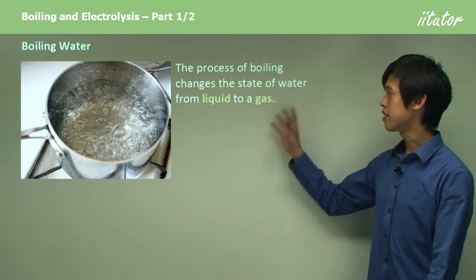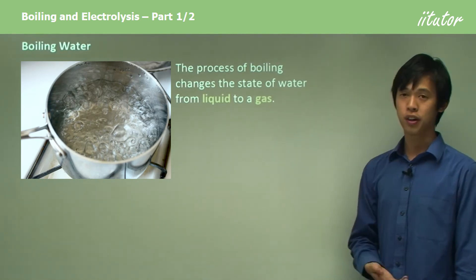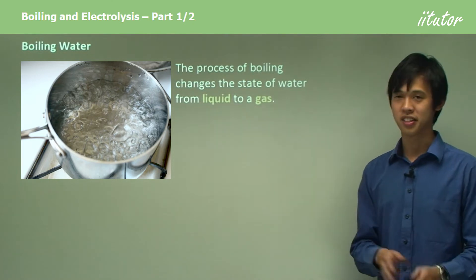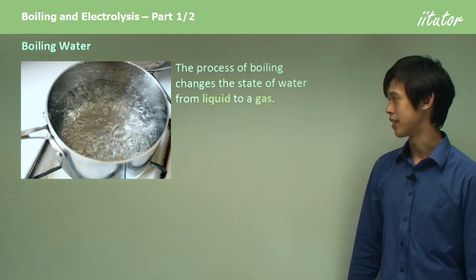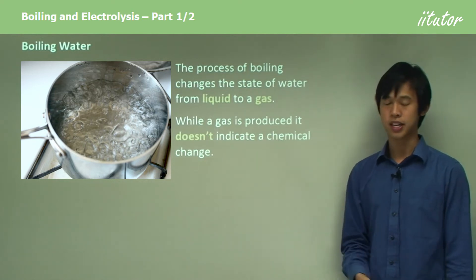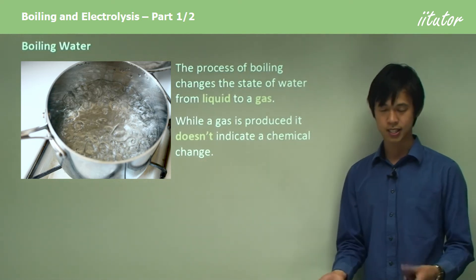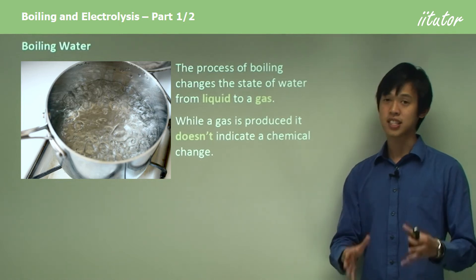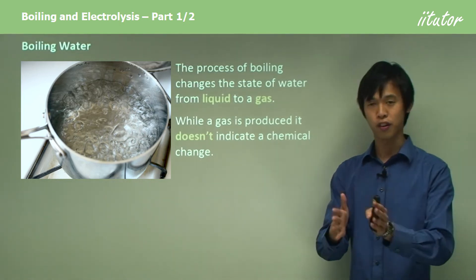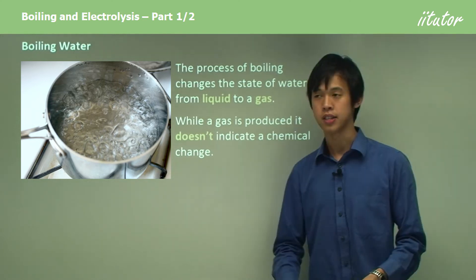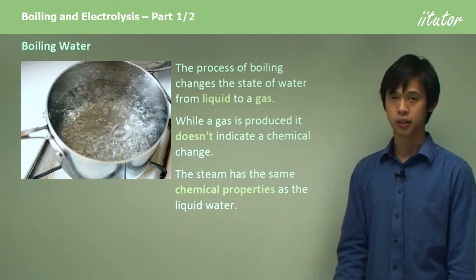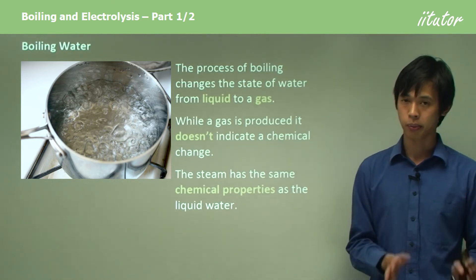Boiling water changes the state of water from liquid to gas — since primary school we've known that boiling turns water into gas. While a gas is produced, it doesn't mean a chemical change is happening. Remember, it's not just the evolution of a gas, it's the evolution of a gas with different properties to what we started with. The steam has the same chemical properties as the liquid water, so it's not a chemical change.